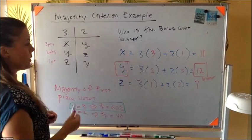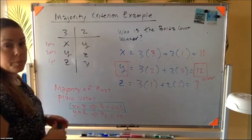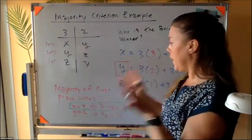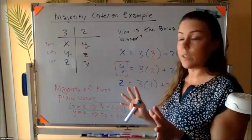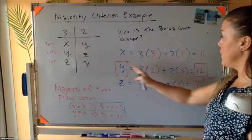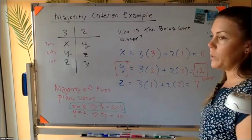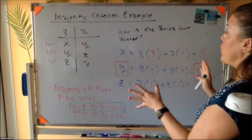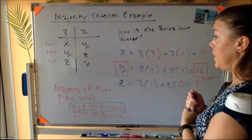So he's thinking he might win. But then once the numbers are worked out, Y ends up winning. So guess what? X is really pissed off now because he's like, wait a minute, hold up. I have a majority of the first place votes. I should be the winner here. But Y is like, nope, we decided on Borda count in the beginning. So I'm going to win, right?